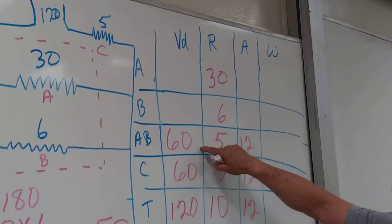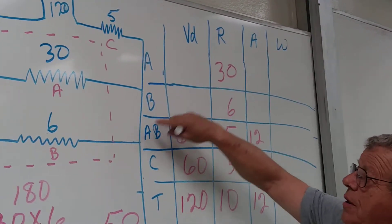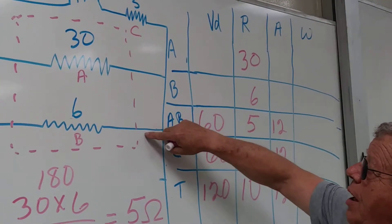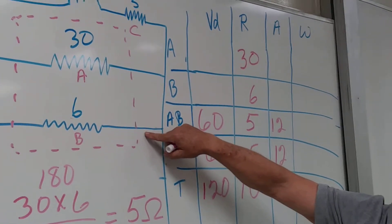But if A and B each got 60 volts, then both of these lines got 60 volts. Yes, sir. Right?